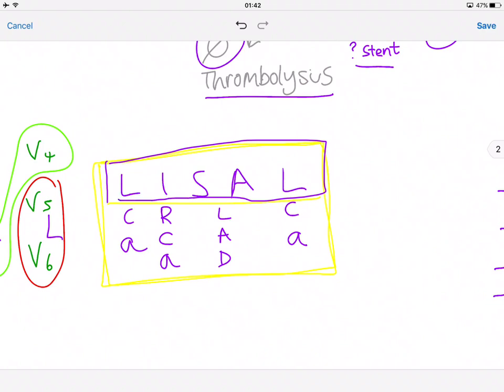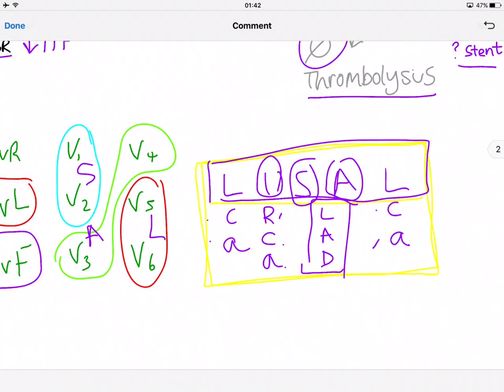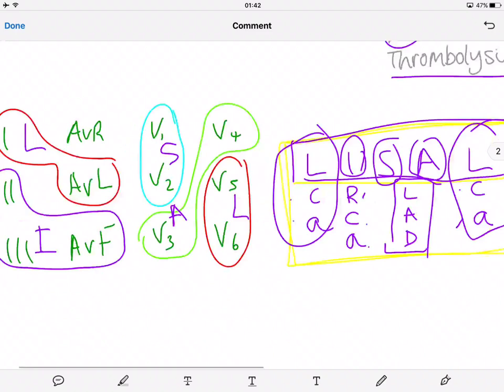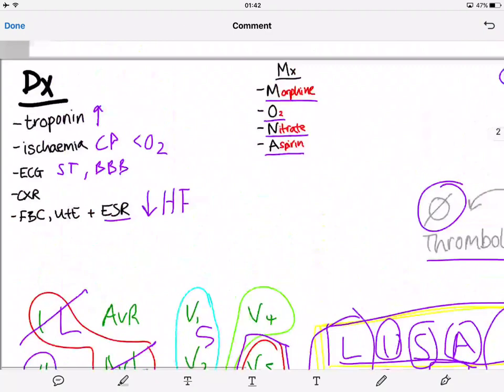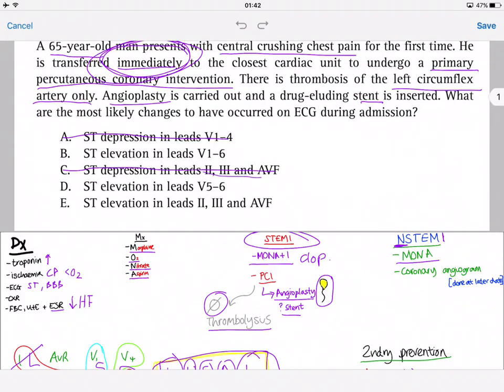I use the mnemonic LISA. We have the circumflex artery here, and the right coronary artery associated with inferior leads. Septal and anterior leads are associated with the left anterior descending artery. We're looking for the circumflex artery, which corresponds to lateral leads. They haven't given us leads 1 and AVL, but they've given us V5 and V6, so the correct answer is D.